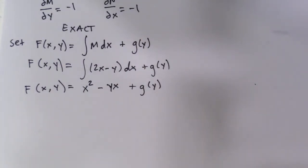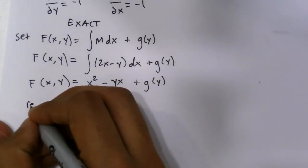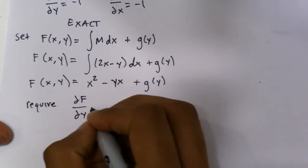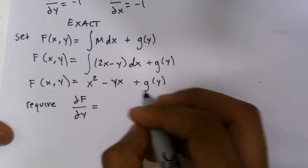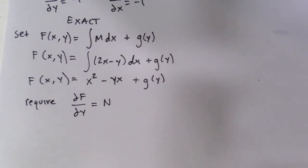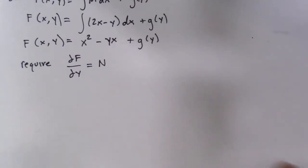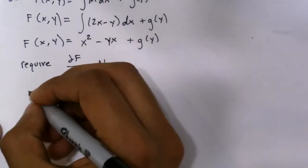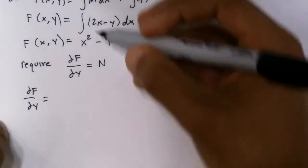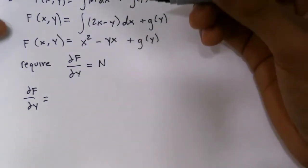Now, I'm going to require that the partial of F with respect to y is equal to N. Alright? It's just one of the things you just have to do. So, here we go. We're going to take the partial of F with respect to y. Which equals, well, this has no y, so that's just a zero, it's just a constant. So, that's zero.